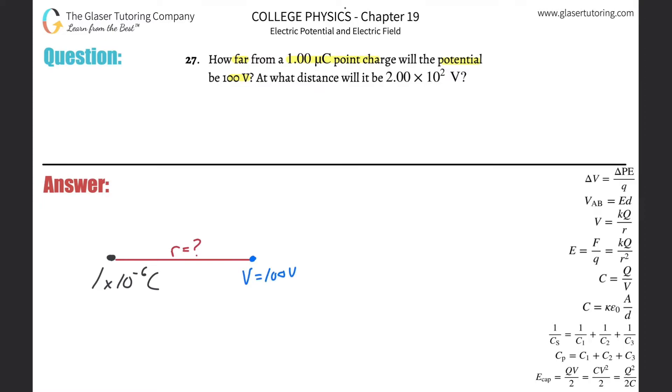So we have our formula, right? The voltage produced by a point charge is going to be equal to the electrostatic constant multiplied by the charge of that point charge, divided by the distance between the charge and the point at which we're measuring or found or know the voltage.